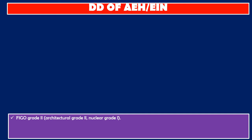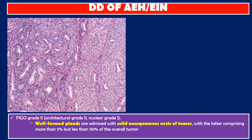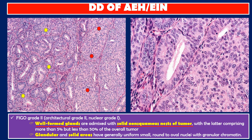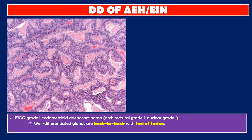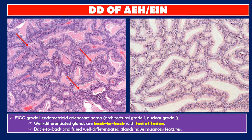FIGO Grade 2 — architectural grade 2, nuclear grade 1: here in this photo, we see well-formed glands admixed with solid non-squamous nests of tumor, with the latter comprising more than 5% but less than 50% of the overall tumor. Glandular and solid areas have generally uniform small round to oval nuclei with granular chromatin. FIGO Grade 1 endometrioid adenocarcinoma — architectural grade 1, nuclear grade 1: here in this photo, we see well-differentiated back-to-back glands with foci of fusion, and back-to-back fused well-differentiated glands with mucinous features.